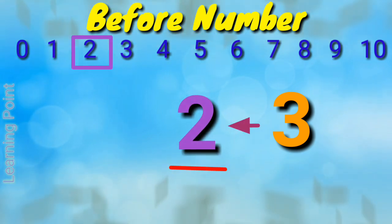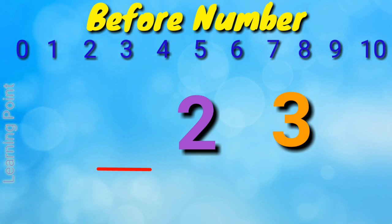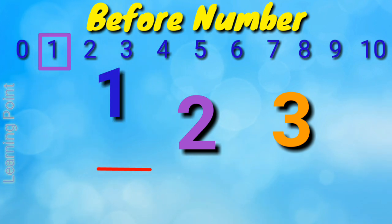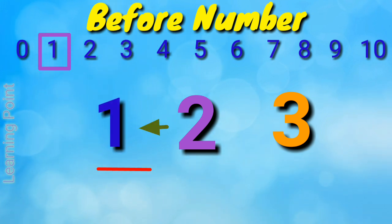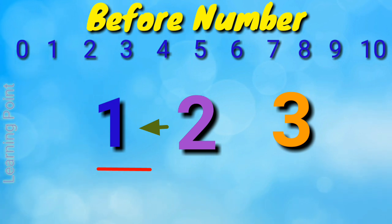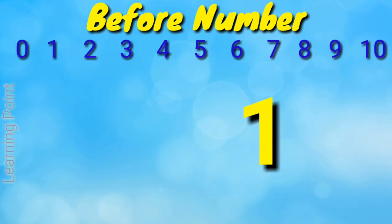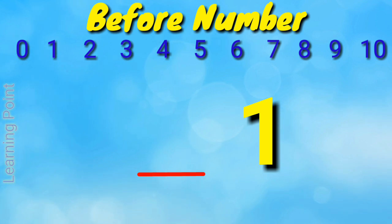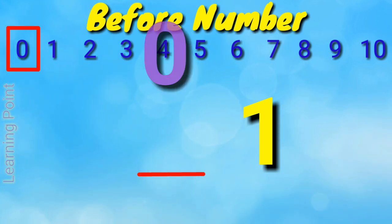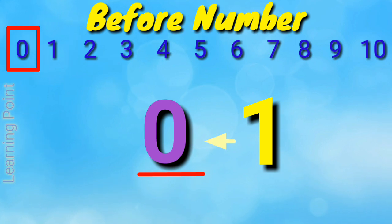You tell me what comes before number 2? Yes, that is number 1. Number 1 is before number 2. Before number 1, which number will come? That is number 0. 0 is before number 1.